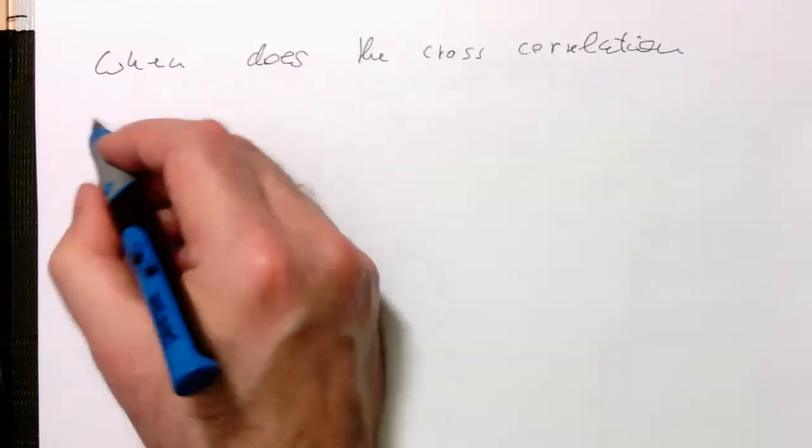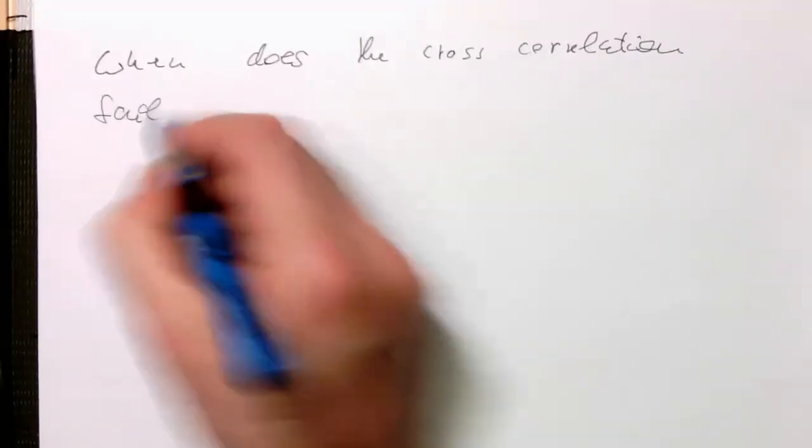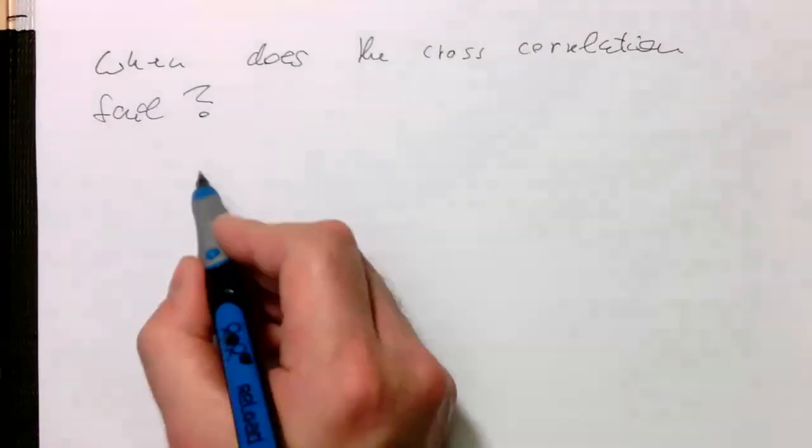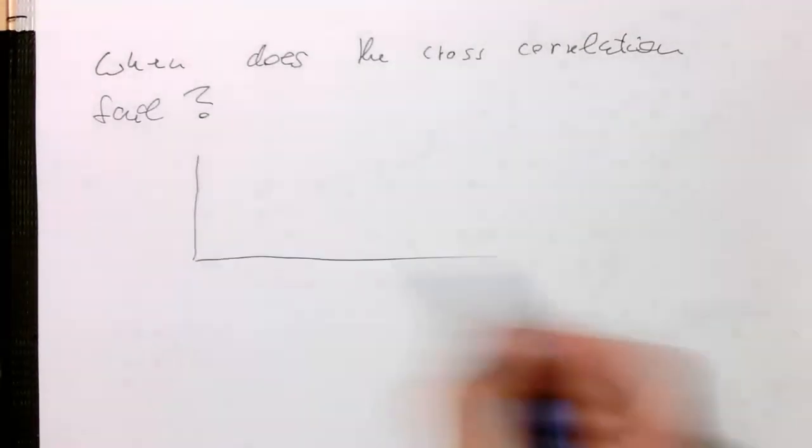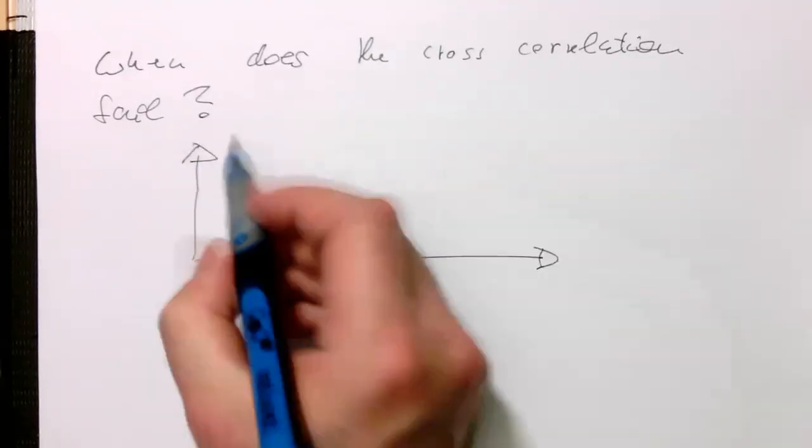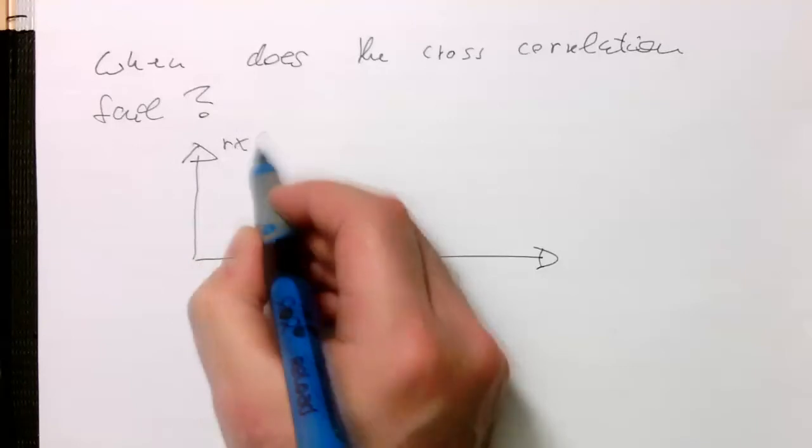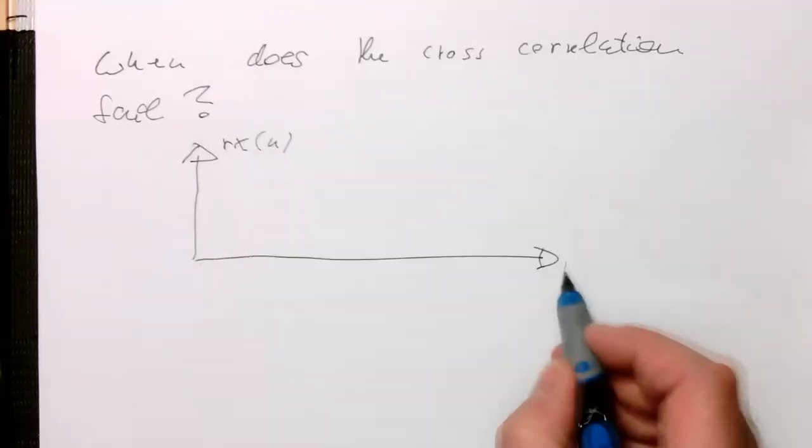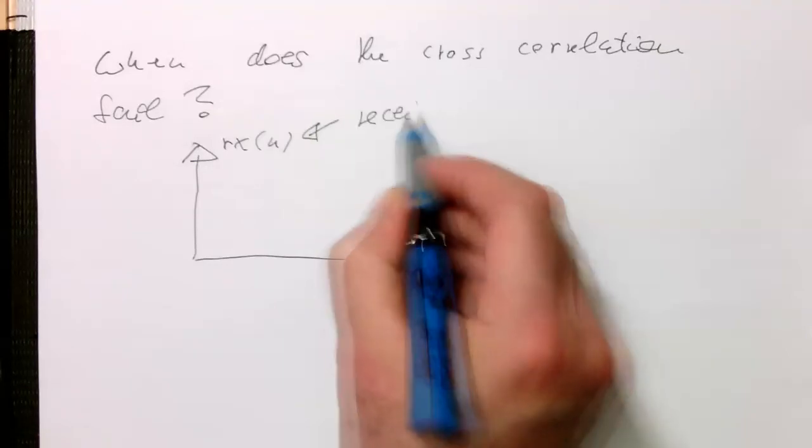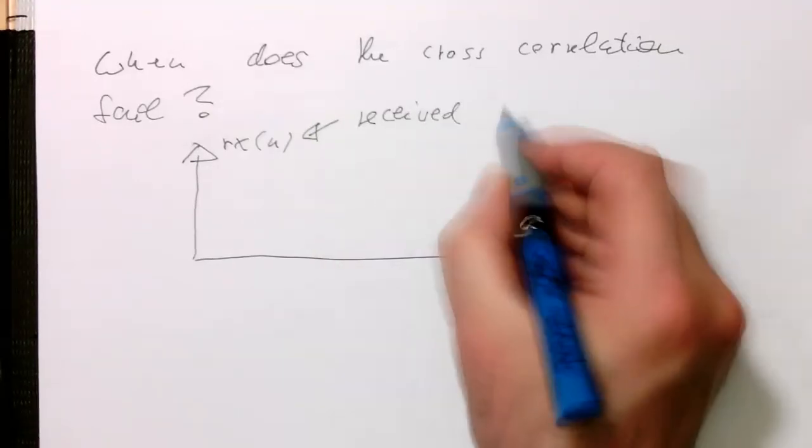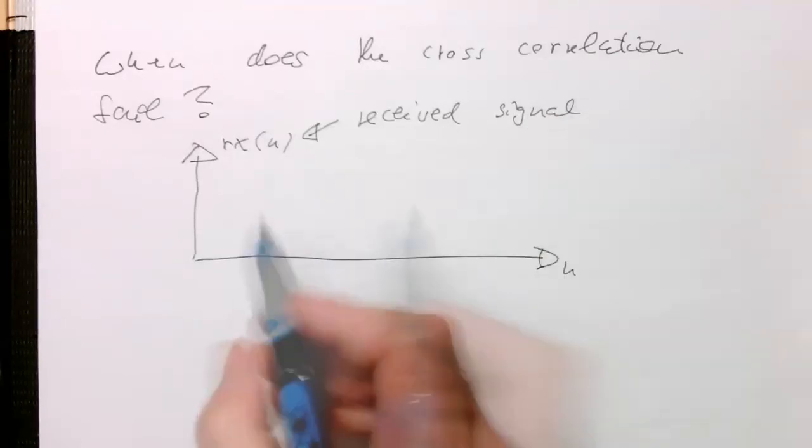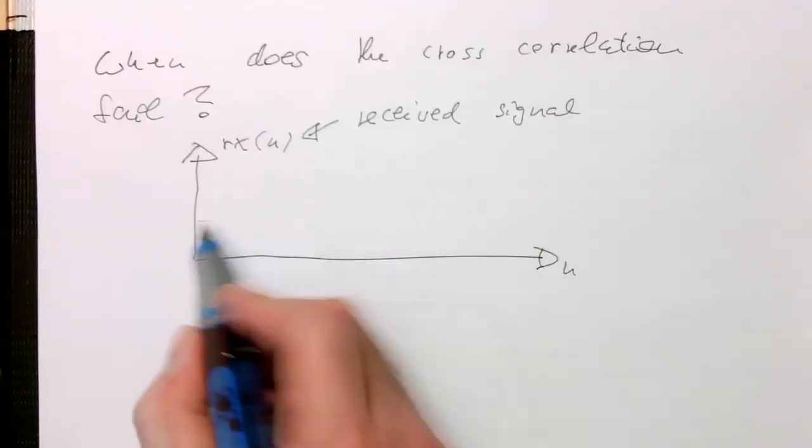Cross-correlation fail. So imagine our received signal - that's our Rx, our received signal - and imagine it looks like that, just in the worst case.